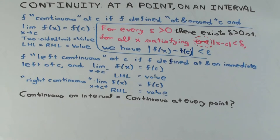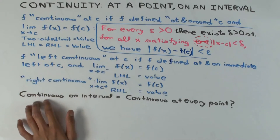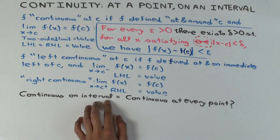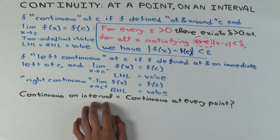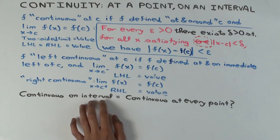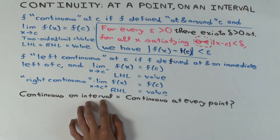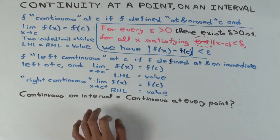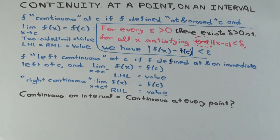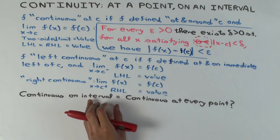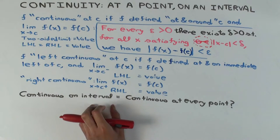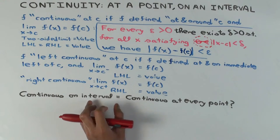Now I want to talk about continuity on an interval. What does it mean for something to be continuous on an interval? It depends on what kind of interval it is. The first naive thought is that continuity on an interval just means continuity at all points of the interval, and that is correct for an open interval. However, if you have a closed interval, the boundary points are a problem because you cannot make sense of two-sided limits there — the function is not even defined on the outside side of the boundary points.